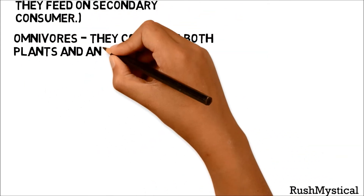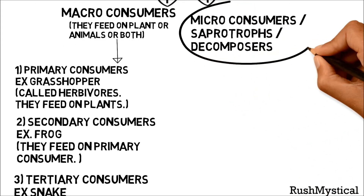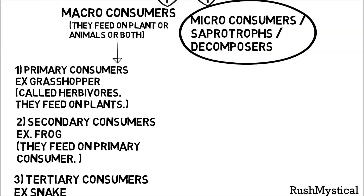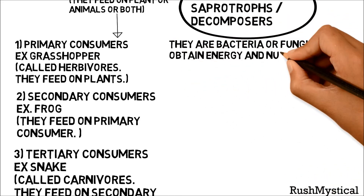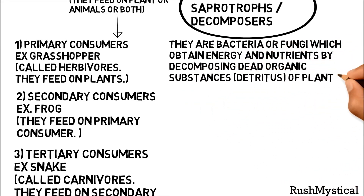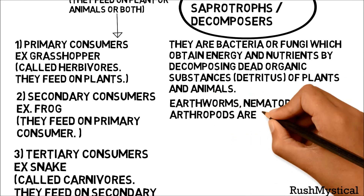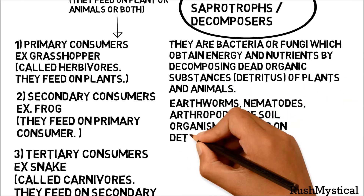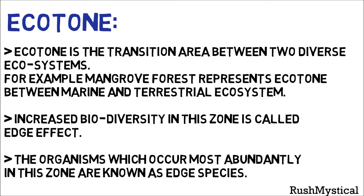We also have omnivores, which consume both plants and animals — for example, humans. The second category is micro-consumers, also called saprotrophs or decomposers. They are bacteria or fungi that obtain energy and nutrients by decomposing dead organic substances, called detritus, from plants and animals. Soil organisms that feed on detritus are called detritivores — for example, earthworms, nematodes, and arthropods.